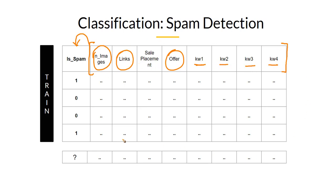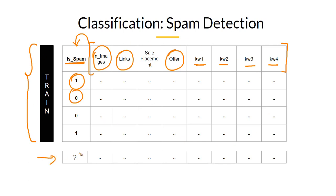All this data can be used to predict if a given email is spam or not. This particular field can take only two values: zero or one. For a classification problem you might have more than two categories, but you will always have a limited number of categories to predict. Once your machine learning model trains on this training data set and learns from it, given a new email, your model will predict if it is spam or not. That is how a typical classification problem works.